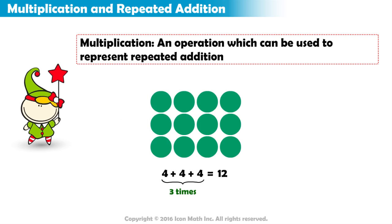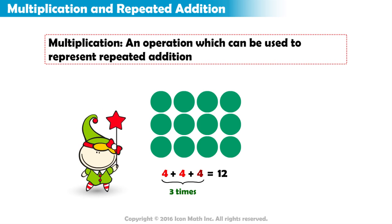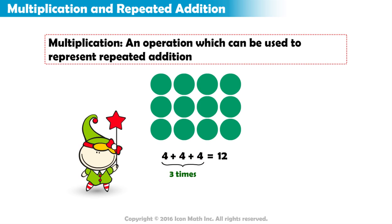Let's go back to our problem. Since we added four to itself three times, we can represent this as three multiplied by four, or three times four, which equals twelve.